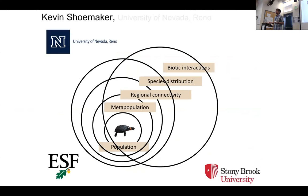This was a different RCN that just recently completed, that looked at ways to integrate different types of models, with the goal of bringing conservation population models out of the single species realm and into including biotic interactions — things like trophic interactions, disease dynamics, and competition. What we tried to do is build, or at least reduce, the technical limitations of doing this type of modeling.